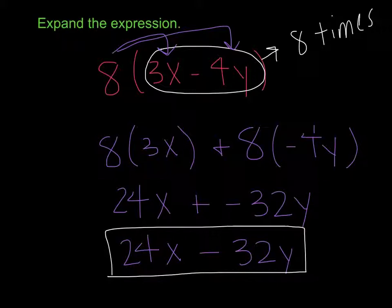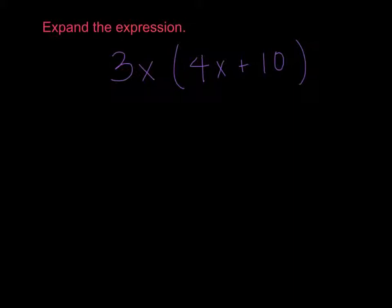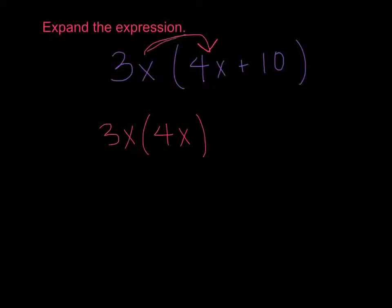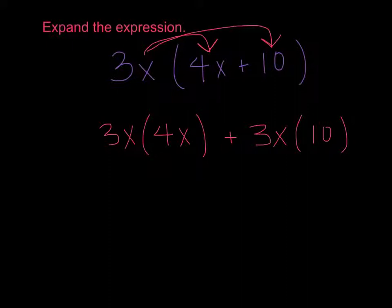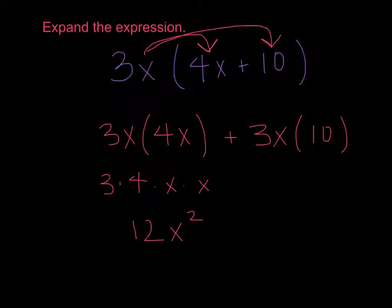Make sure you're writing these in the blocks provided for you. Example number 3 says 3x times parentheses 4x plus 10. I'm going to take my 3x and multiply it by 4x, and I'm going to take my 3x and multiply it by 10. 3x times 4x is like saying 3 times 4 times x times x. 3 times 4 is 12, and x times x is x squared. Plus 3 times 10 is 30, so that's 30x.